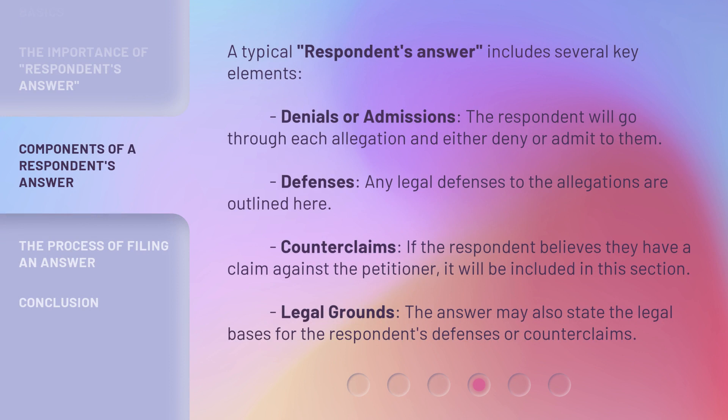A typical Respondent's Answer includes several key elements. Denials or Admissions: the Respondent will go through each allegation and either deny or admit to them. Defenses: any legal defenses to the allegations are outlined here. Counterclaims: if the Respondent believes they have a claim against the petitioner, it will be included in this section. Legal Grounds: the answer may also state the legal basis for the Respondent's defenses or counterclaims.